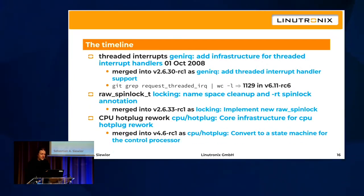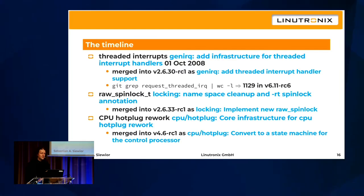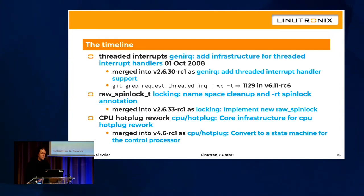Late October brought threaded interrupts — not universally welcomed, but useful for development since you could debug interrupt handlers without crashing the whole box. It was merged in 2.6.30. Later we got the raw_spinlock_t annotation — the first thing merged that had no benefit for the non-RT kernel. It's simply an annotation to distinguish spinlocks that spin on RT from those that don't.